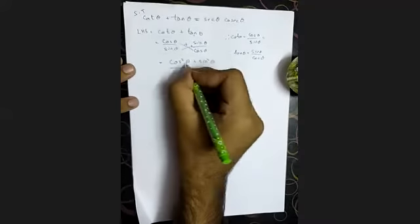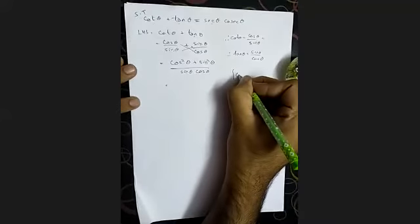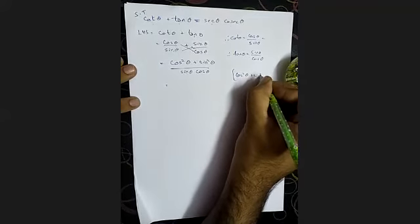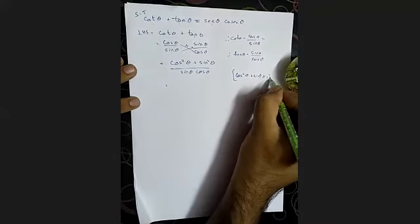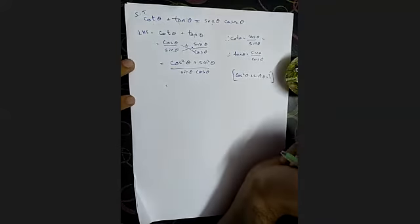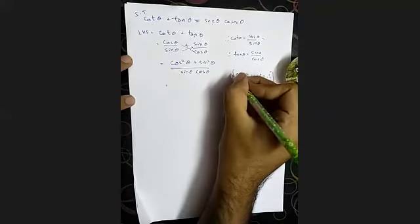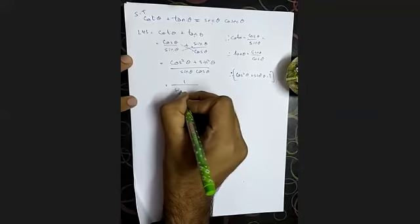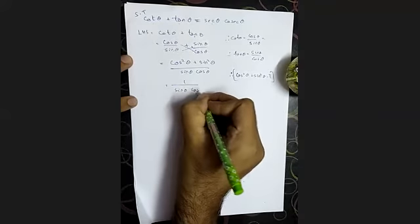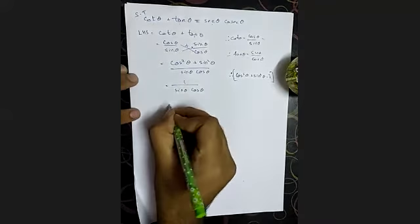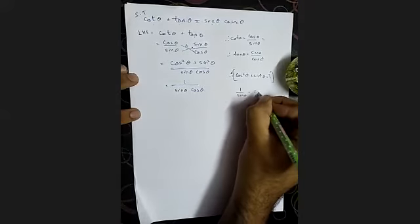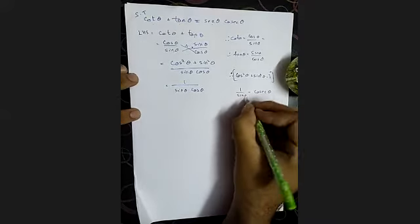Now, what is cos squared theta plus sin squared theta? Sin squared theta plus cos squared theta is equal to 1 — that is our first trigonometric identity. So we have 1 by sin theta cos theta.